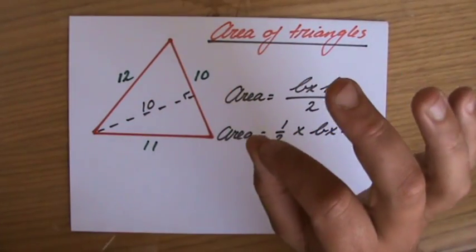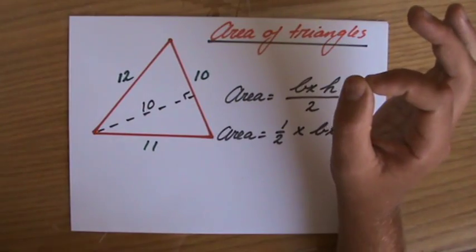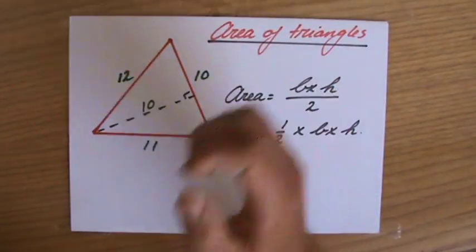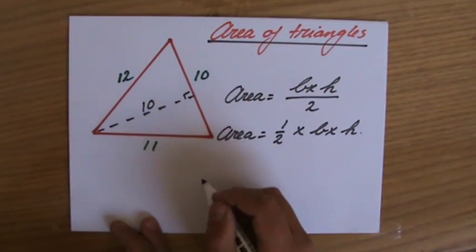Base times height divided by 2, where the base and the height make an angle of 90 degrees. That is crucial.